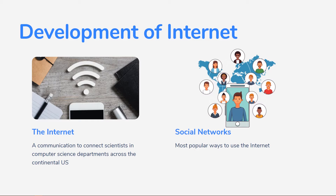The internet was originally designed as a means of communication to connect scientists in computer science departments across the continental United States. It was envisioned as a community-building technology that allows scientists to share data, knowledge, and opinions in a real-time online environment. With the development of the web in the early 1990s, millions of people began to have internet and email accounts, and the community-building aspect of the internet was encouraged. In the late 1990s, the commercial value of online community was recognized as a potential new business model.